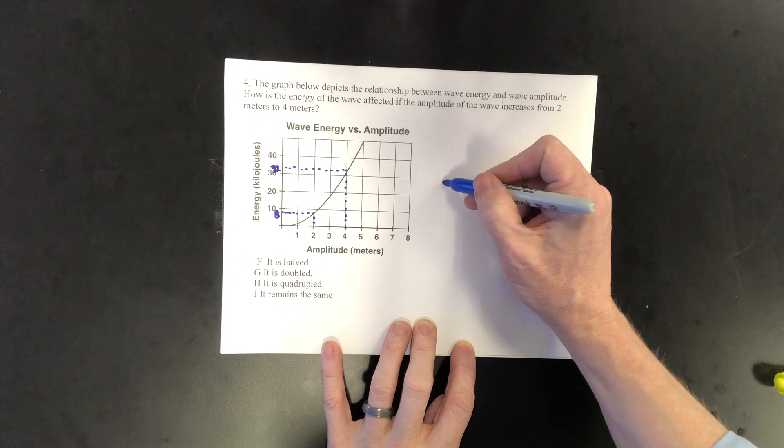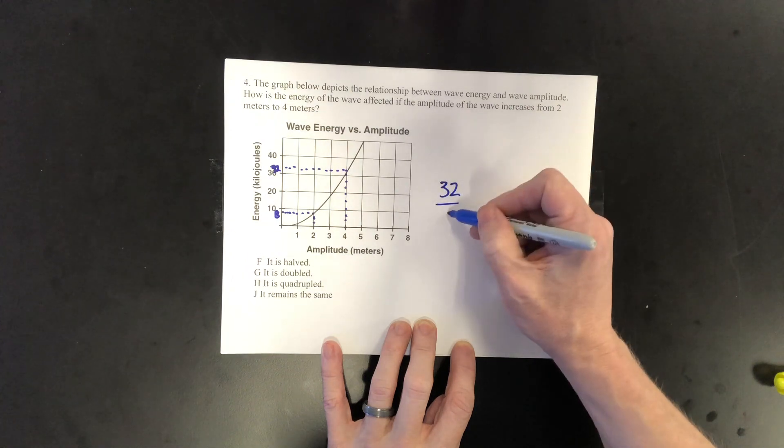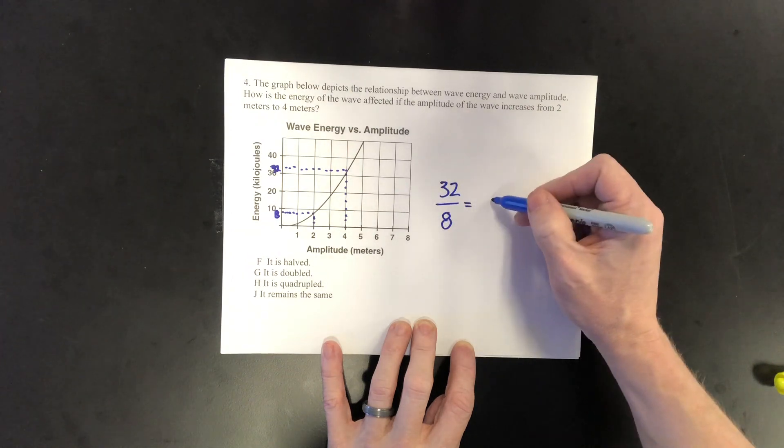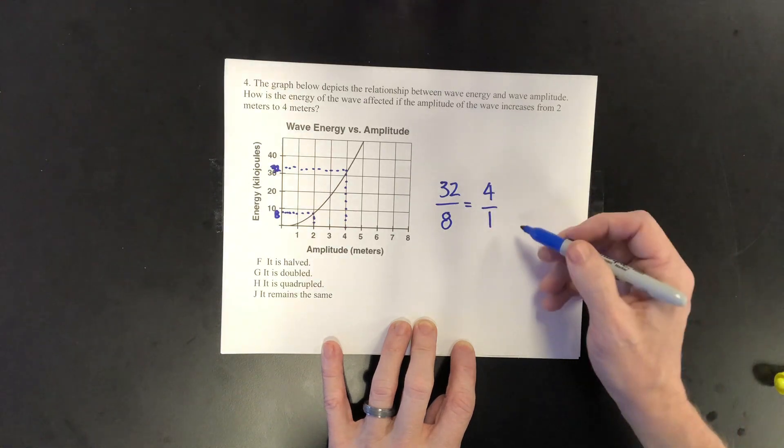And if I take 32 kilojoules divided by 8 kilojoules, I get 4 over 1.